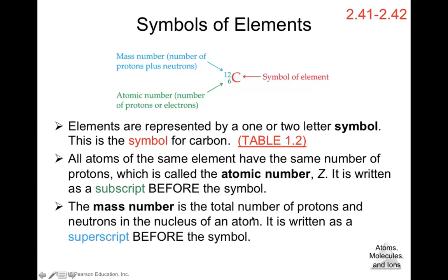The mass number is the total number of protons and neutrons in the nucleus, written as a superscript before the symbol. So the mass number goes on top left and the atomic number on the bottom left of the element symbol. The atomic number represents the number of protons, and the mass number represents the sum of protons and neutrons.